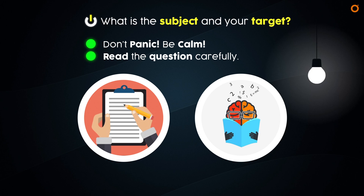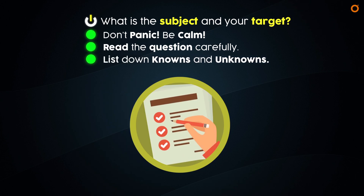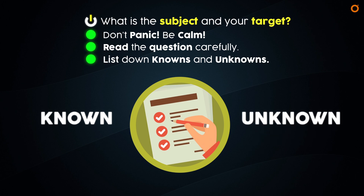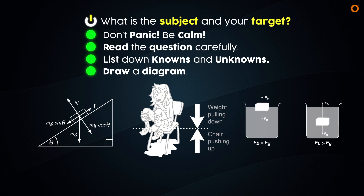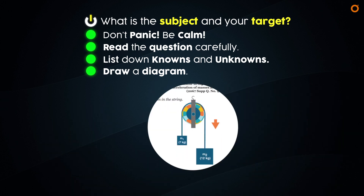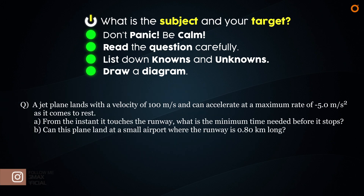After reading through the problem at least once, list down anything that is given under a category labeled 'known' and anything asked to find under 'unknown'. If possible, draw a diagram — it cannot be emphasized enough how much easier a problem becomes once it is drawn out. Once done, try to bring this drawing into motion like an animation in your brain. This gives a clear understanding of what is happening in the problem.